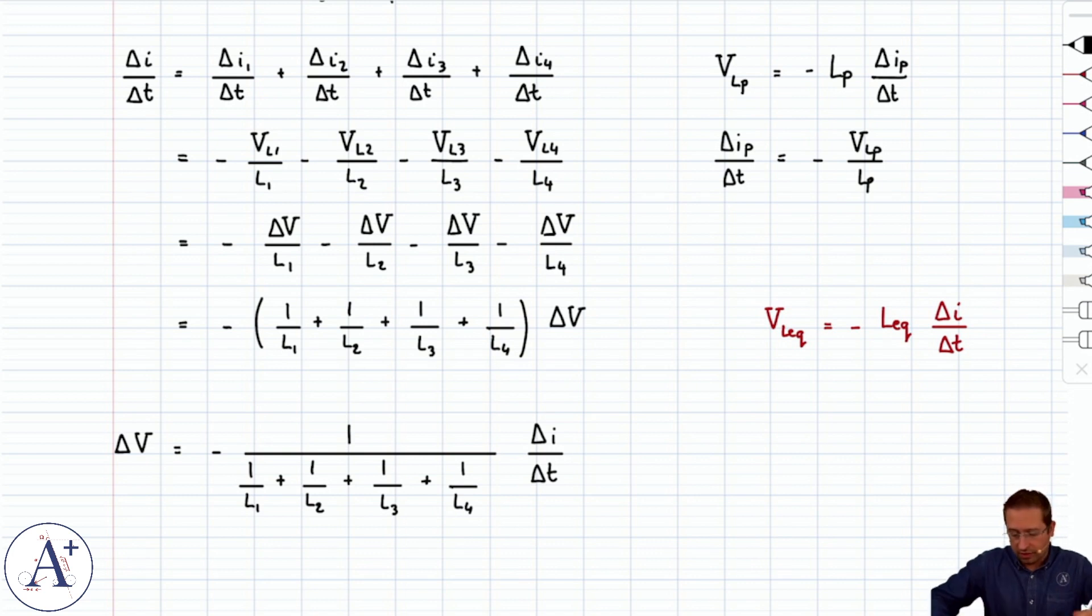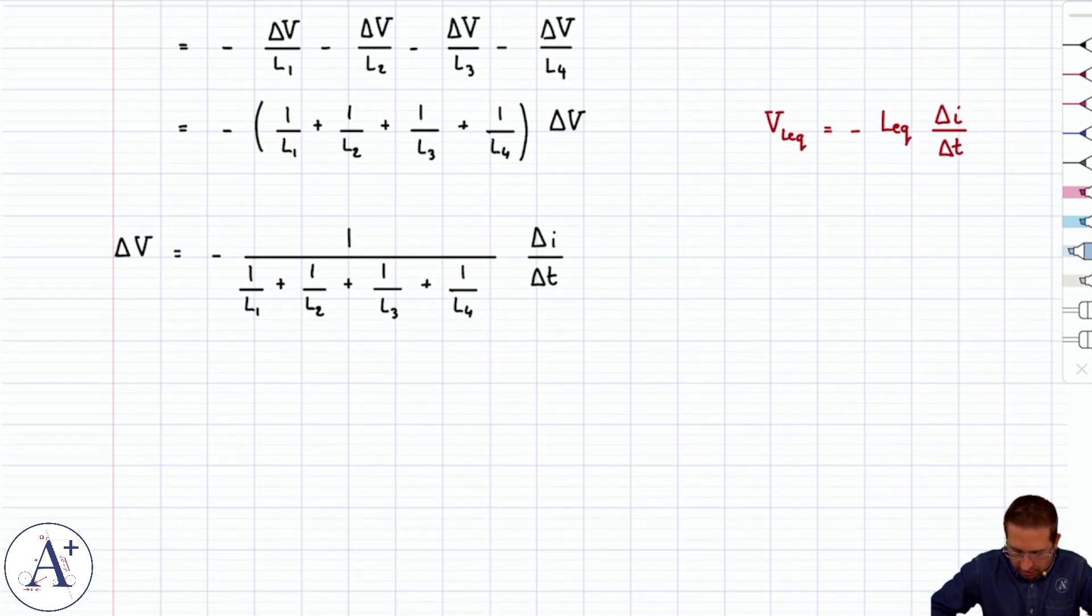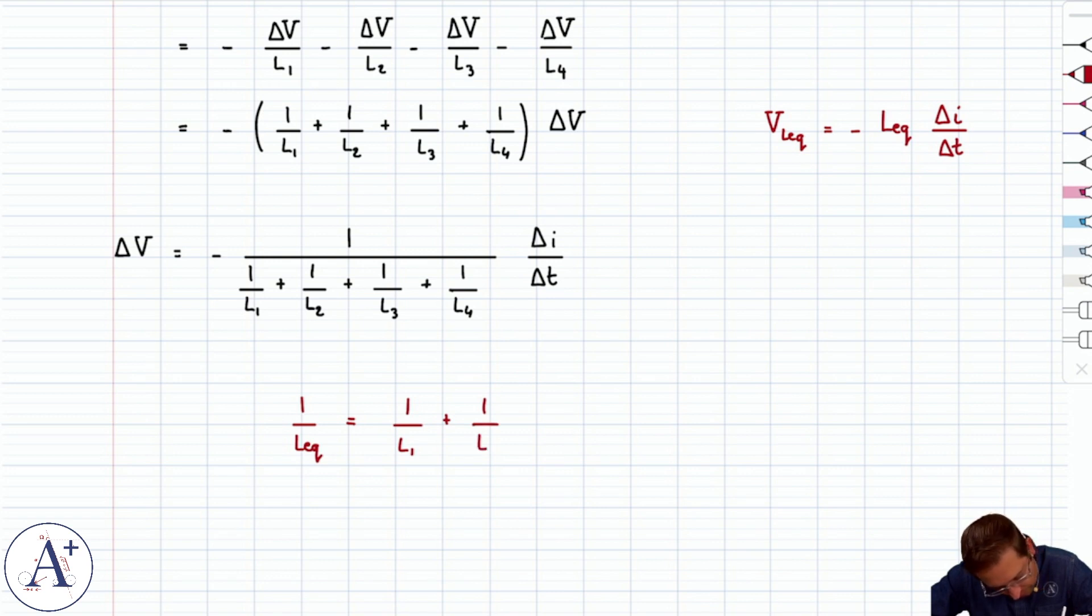Now you could leave it in that form and you could argue that L equivalent is equal to this and that would be true. But in practice that's not really how it's presented. The way that we present this is by writing that 1 over L equivalent, and we've seen this before, is going to be equal to 1 over L1 plus 1 over L2 and so on and so forth. And this is the same type of math that we found when we studied resistors in parallel.